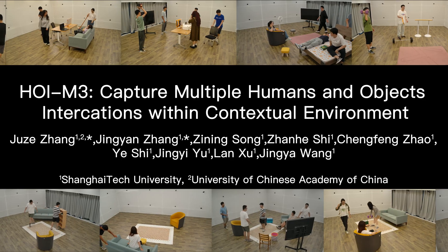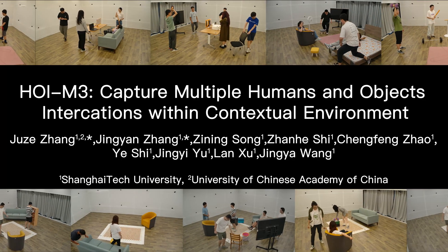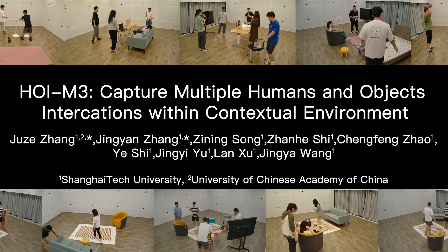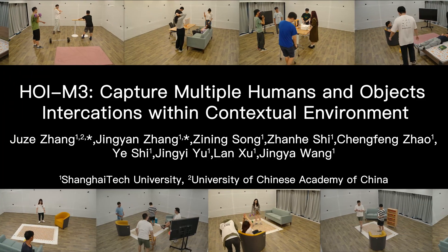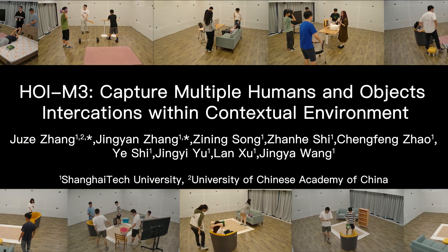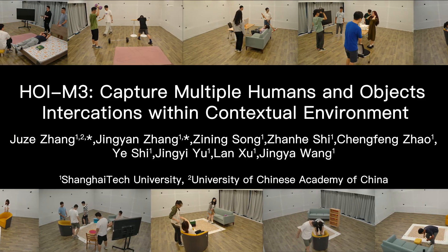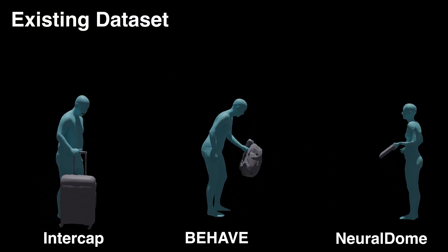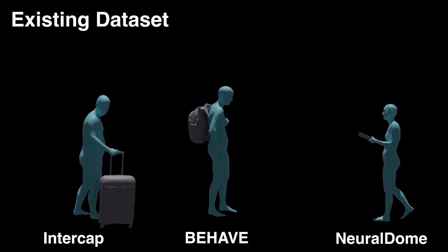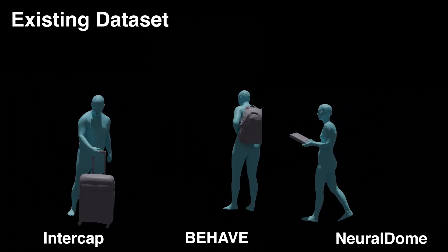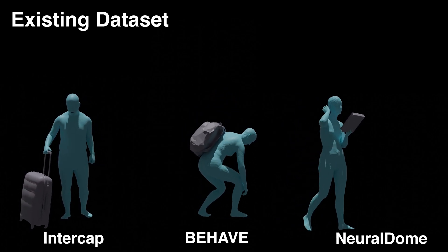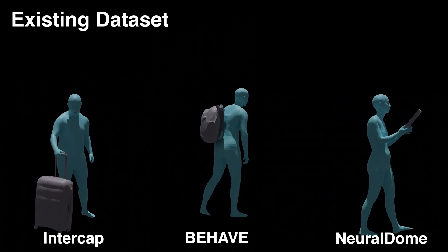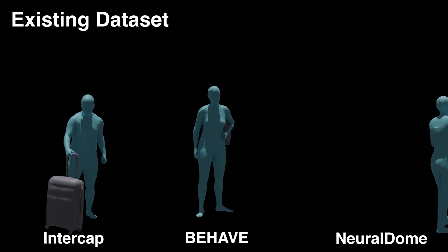In this paper, we propose a larger-scale dataset for modeling the interactions of multiple humans and multiple objects. HOIM3 captures multiple humans and objects' interactions within a contextual environment. Humans naturally interact with both others and the surrounding multiple objects, engaging in various social activities. However, recent advances in modeling human-object interactions mostly focus on perceiving single humans and objects.